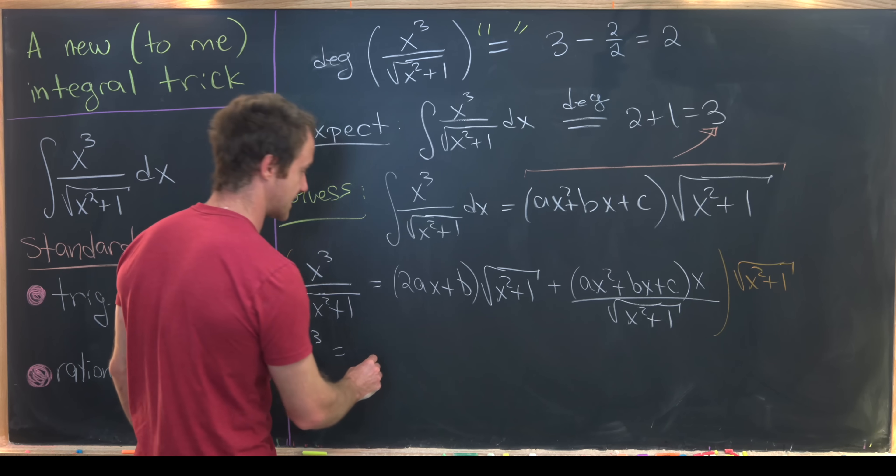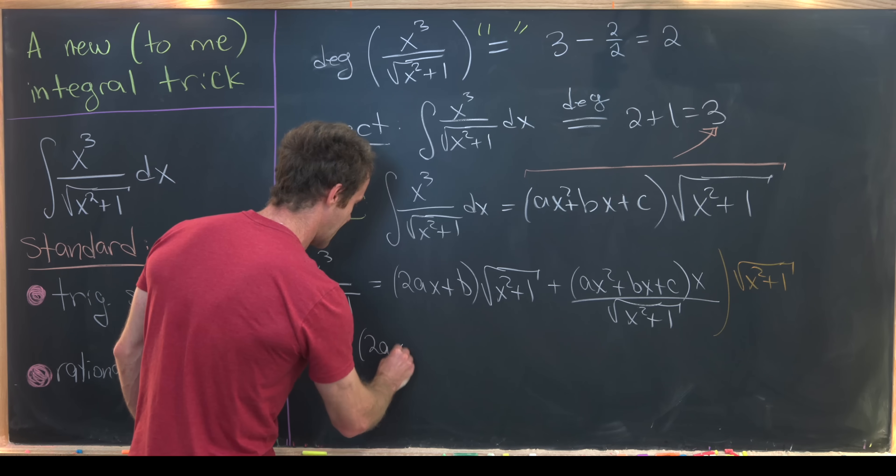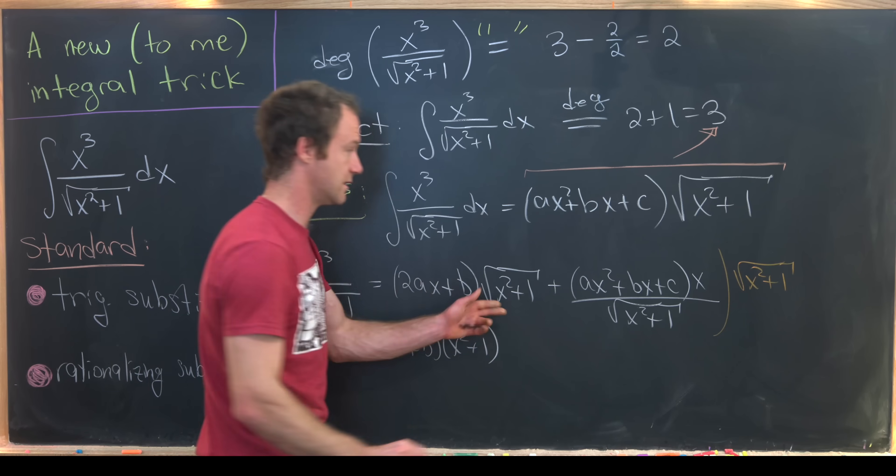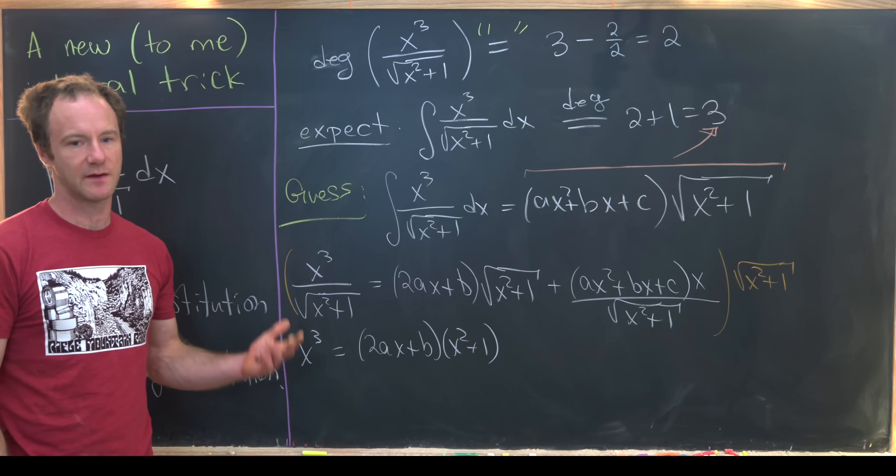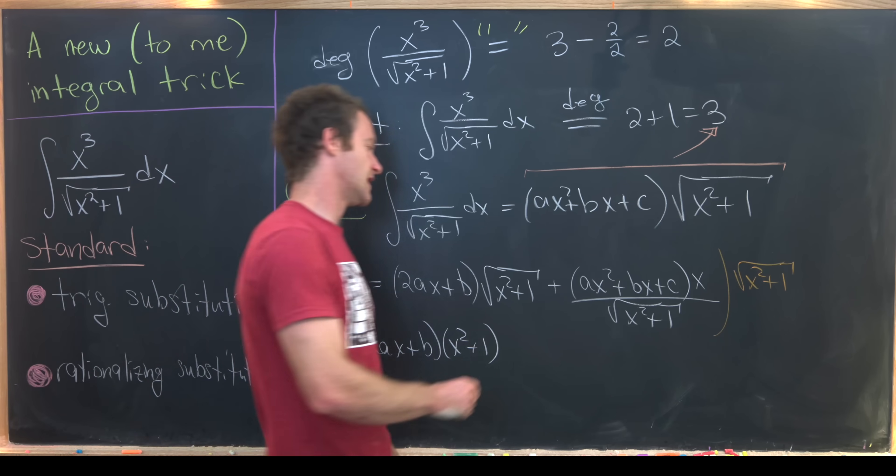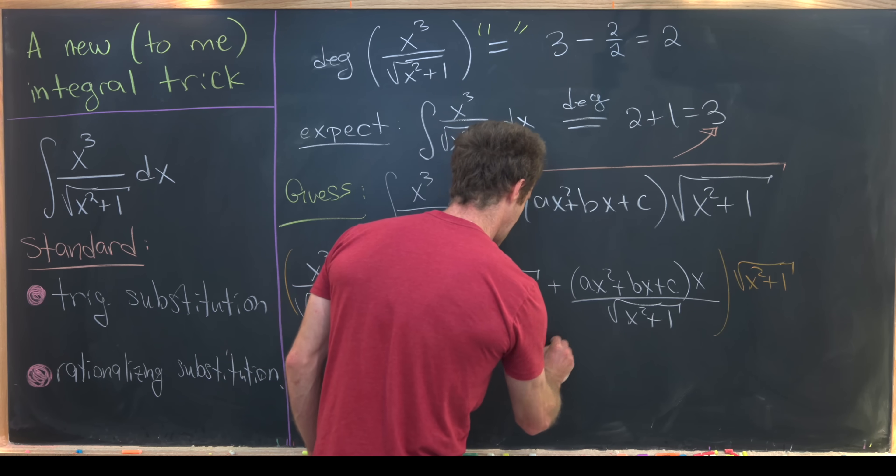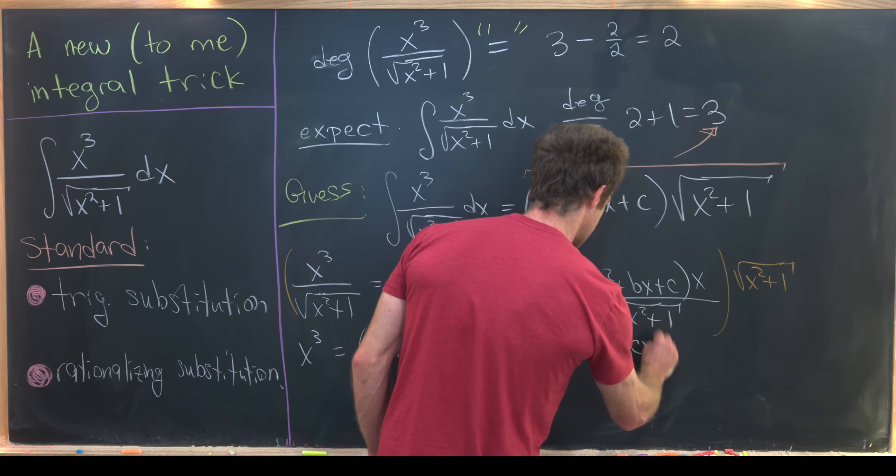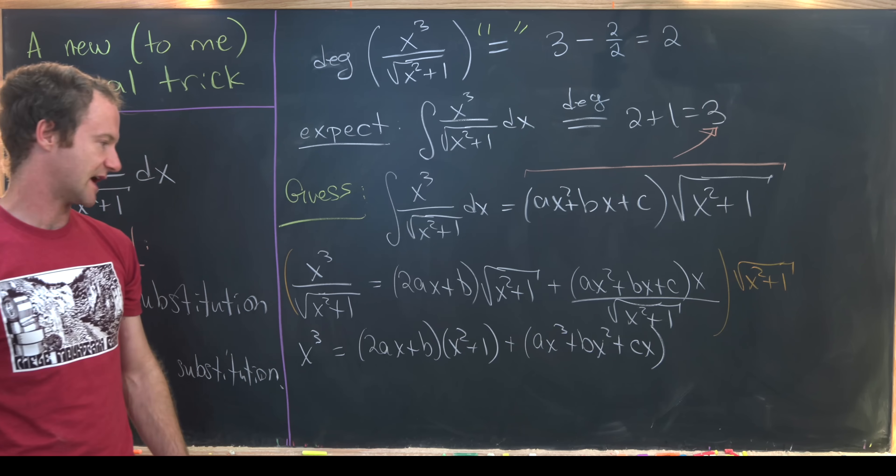And on the right-hand side, it'll give us 2ax plus b times x squared plus 1 because those two square roots build up and annihilate each other. And then here we'll have plus ax cubed plus bx squared plus cx by distributing that x through.